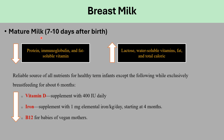Mature milk comes after transition milk, between 7 and 10 days after birth. This milk is lower in protein, immunoglobulin, and fat-soluble vitamins, similar to transition milk, but higher in lactose, water-soluble vitamins, fat, and total caloric content. This milk is a reliable source of all nutrients for healthy term infants, except for the following while exclusively breastfeeding.